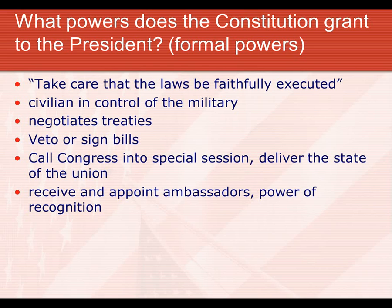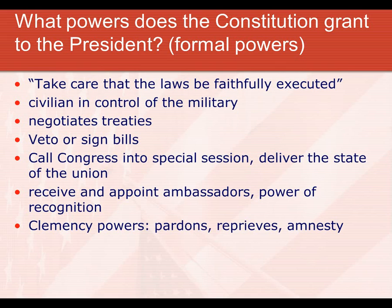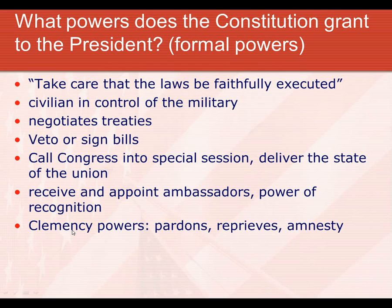Our president has clemency powers — these are the president's judicial powers. The president has the ability, basically through the role of enforcer of law, to sometimes check the judiciary and change a decision the court has made. The president can pardon someone. If someone has been convicted of a federal crime, the president can pardon them — like a get-out-of-jail-free card. They can say there were extenuating circumstances and for whatever reason allow this person to get out, or say we're not going to allow this person to be prosecuted.